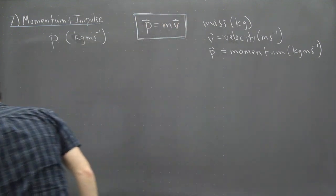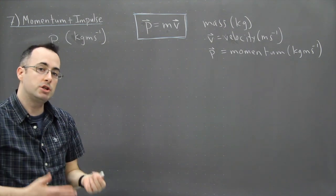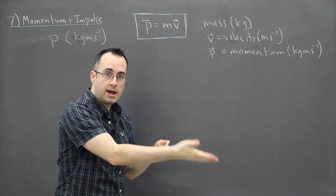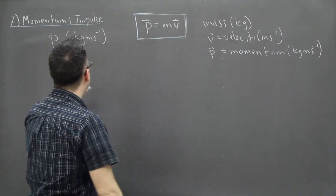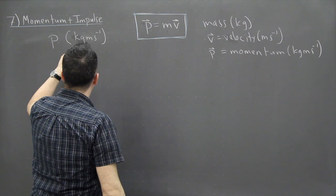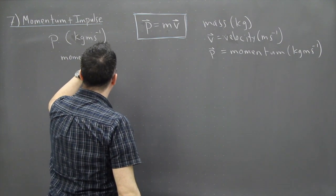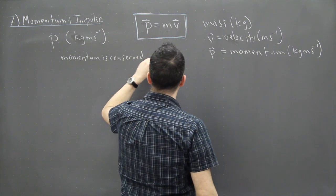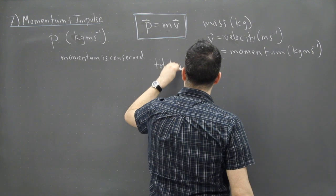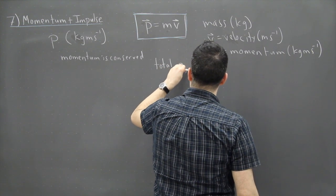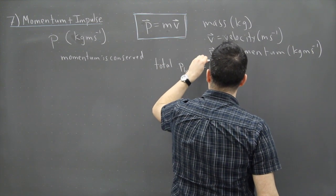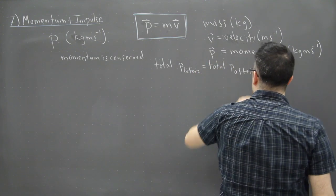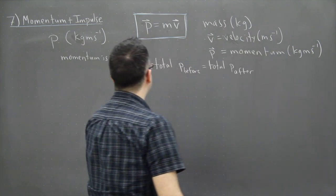This comes out a lot. This helps us in a lot of situations, especially if there's a collision. So if two things run into each other, then you can actually figure out what's going to happen. The key thing here is momentum is conserved. So that means basically that the total momentum before equals total momentum after.